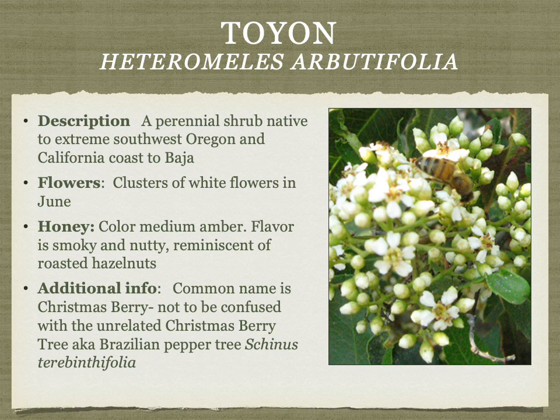Toyon is a plant growing from extreme southwest Oregon along the California coast down to Baja. It's a medium amber honey that is smoky and nutty, reminiscent of smoked or roasted hazelnuts. The common name is Christmas berry, but it should not be confused with the unrelated Christmas berry tree, also known as Brazilian pepper tree — a completely different, unrelated plant.